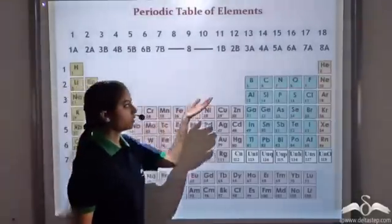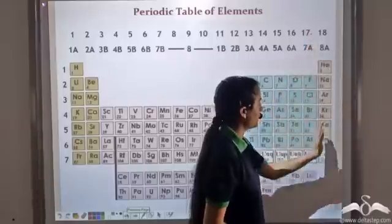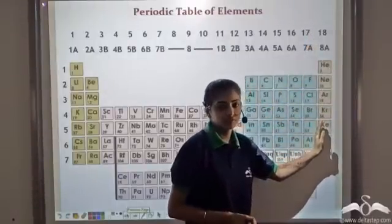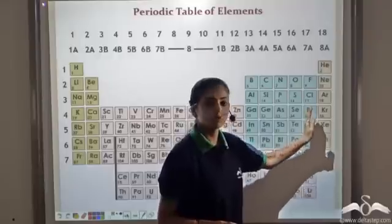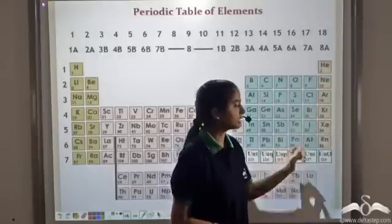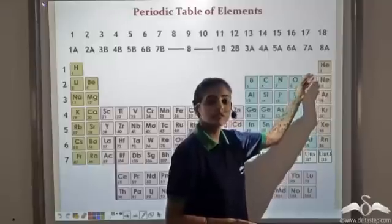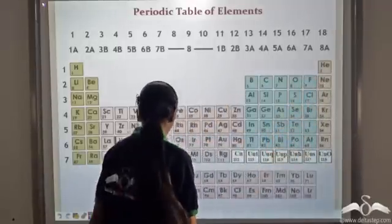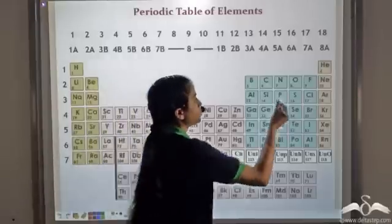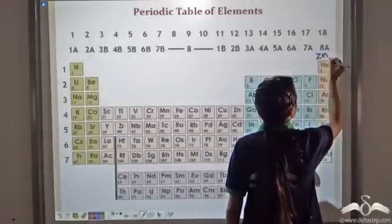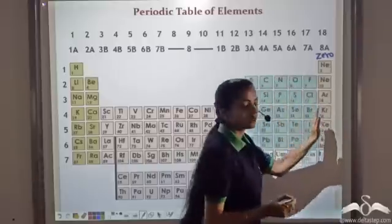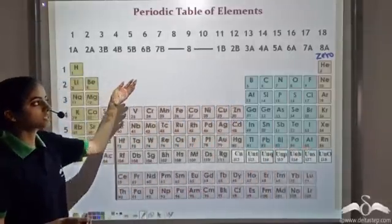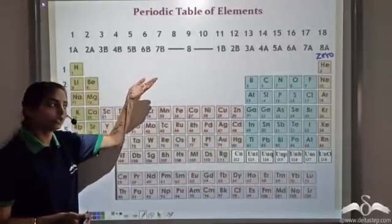The modern periodic table has 17 of those groups, and the last group of elements was discovered after Mendeleev gave his periodic table, so they were accommodated by Moseley. These elements are known as noble gases or inert gases, as they do not participate in any chemical reaction. This group is also known as group 0. That is how we get the 18 groups in the modern periodic table.